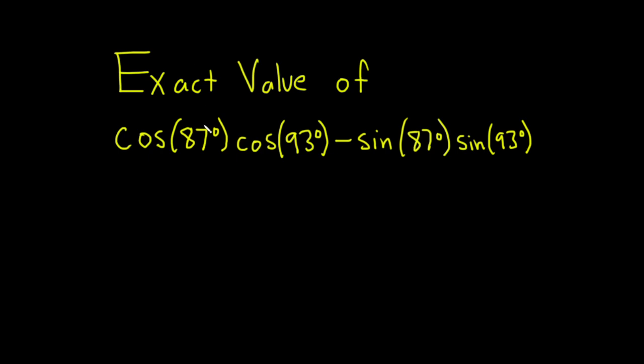Hello, in this problem we have to find the exact value of cosine of 87 degrees times cosine of 93 degrees minus sine of 87 degrees times sine of 93 degrees.